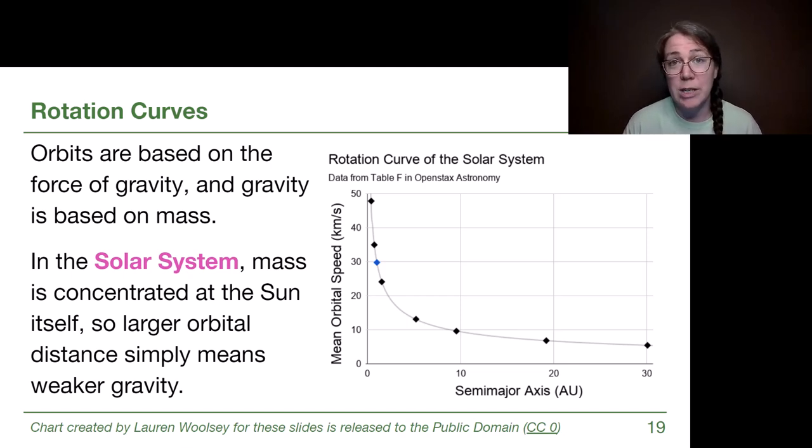The blue diamond here is the Earth, so the Earth is zooming around in its orbit. And as we continue to go out it kind of flattens out. If we were to add other Kuiper Belt objects, other Oort Cloud objects, they would again follow this same pattern because it's just the force of gravity that we are really focusing on.